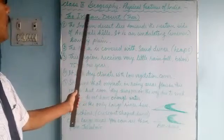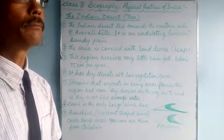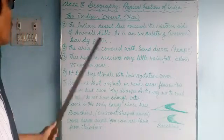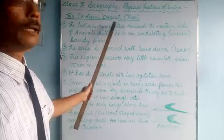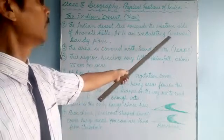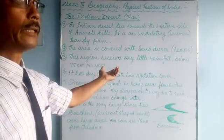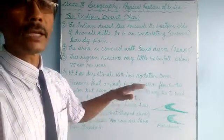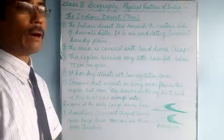The Indian desert is also known as the Thar Desert, so you must have heard the name before — Thar Desert or the Indian Desert. There are seven points written here. The Indian desert lies towards the western side of the Aravali Hills. Beyond the Aravali Hills, towards the western side, the desert of Rajasthan starts.